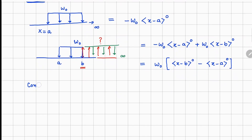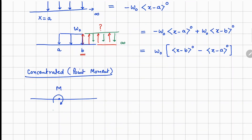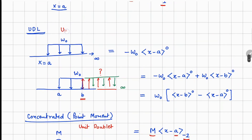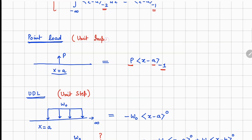The third building block is the concentrated or point moment. This occurs with fixed supports where a reaction moment M is applied at location a. A positive clockwise moment is written as M times (x minus a)^(-2). Here M is the moment value, a is the location, and minus 2 indicates it is a point moment. The mathematical names are: unit doublet function for the point moment, unit step function for the UDL, and unit impulse function for the point load.